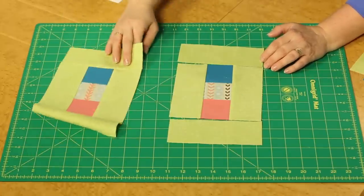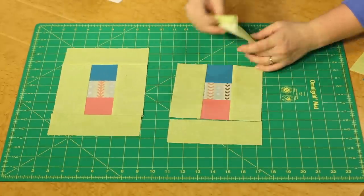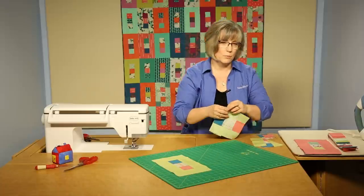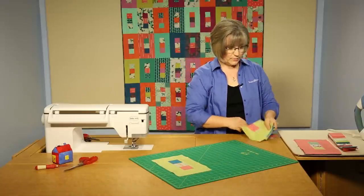Now I've stitched with red thread so that you could see where my seams were. You would be probably stitching with a cream or a light gray tan color thread, very neutral.